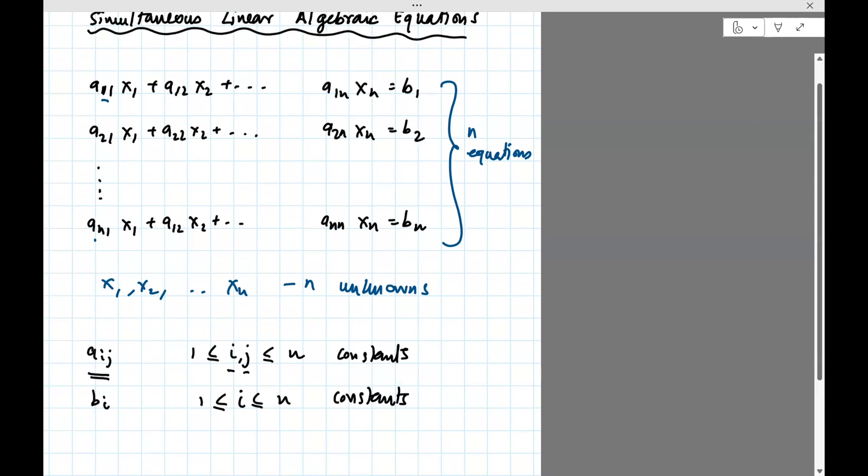And then b1, or bi, where i goes from one to n are also constants, they're given to you. And then as I said, the xi is the unknowns.